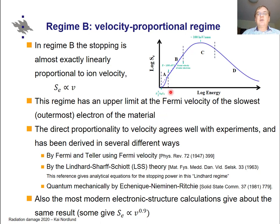The basic motivation here is that when the ion velocity is lower than the Fermi velocity of the outer electrons, as already mentioned in the previous section, the Born-Oppenheimer approximation is valid and the ion is not charged — that is, it has the electrons it would have if it were stopped. In that case it can be treated as a quasi-neutral particle moving in the material.